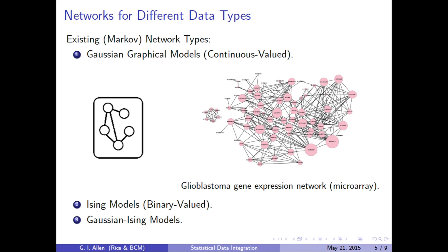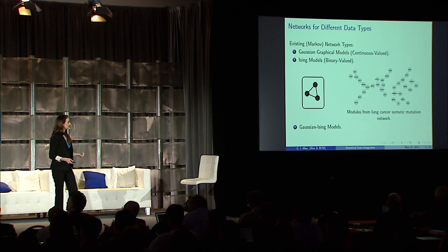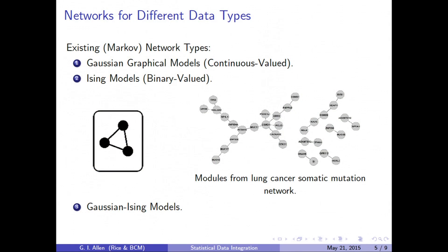In terms of what's out there for these types of networks modeling different types of big data, the first is a Gaussian graphical model. Many of you might be familiar with this from gene expression — it's often used to model regulatory relationships and pathways among genes based on gene expression and microarray data. But these days, people are using RNA sequencing technologies instead of microarrays. There's also the Ising model, designed for binary-valued data, which could be used to model somatic mutations — either you have a mutation at a spot in the genome or you don't.